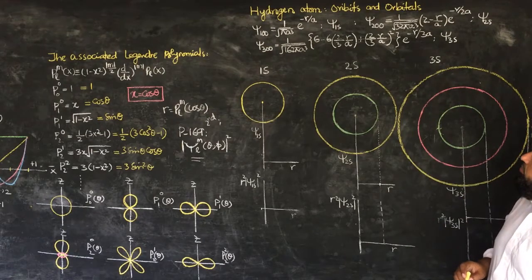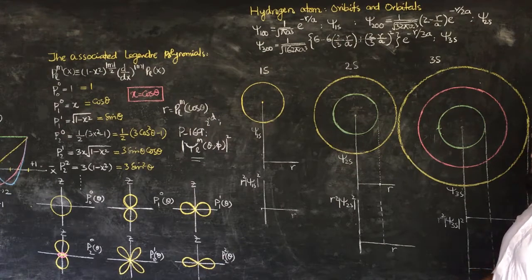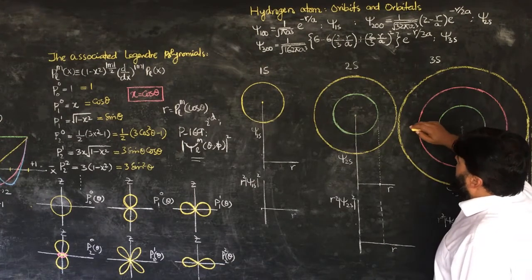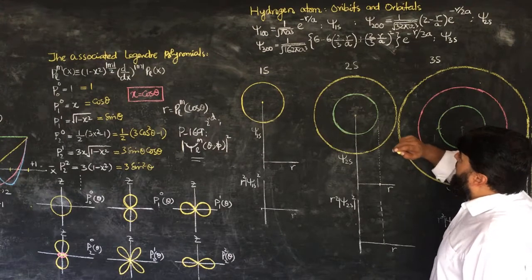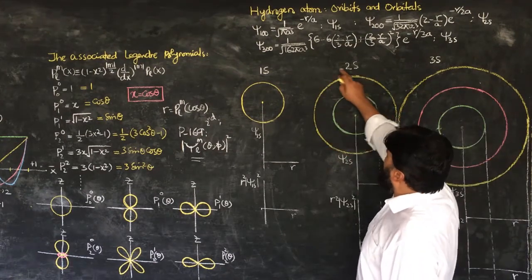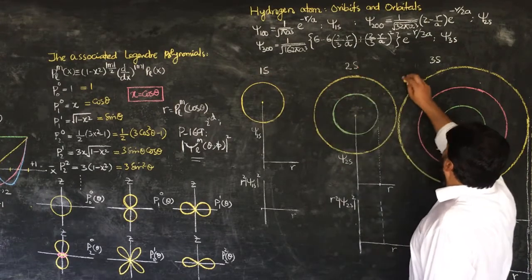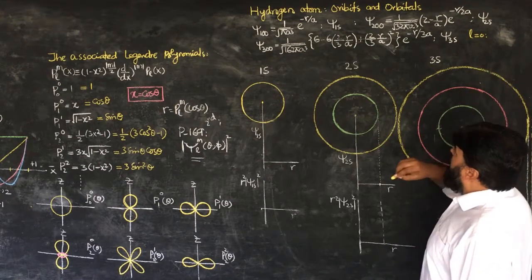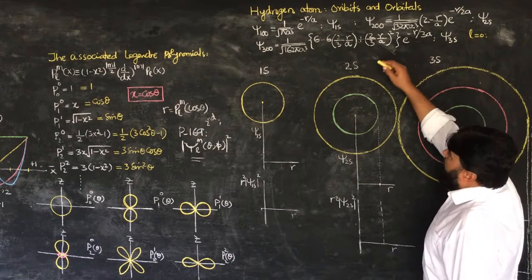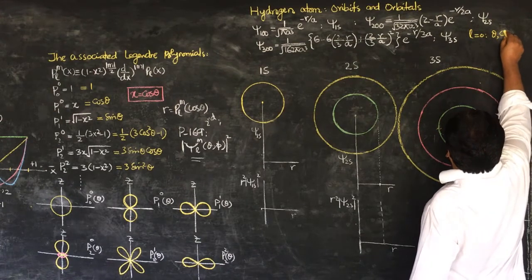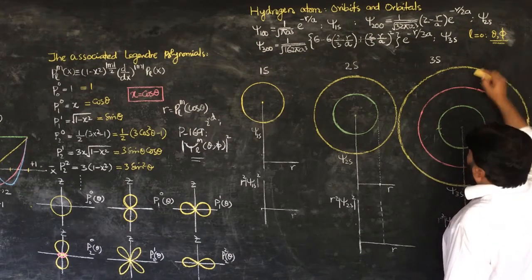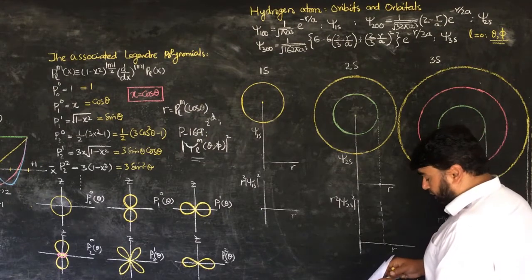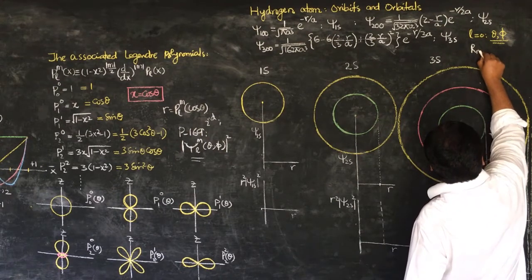We will discuss the hydrogen atom, focusing on orbits and orbitals. We will focus on the first three orbits and inside those orbits, only the s orbital. Because when l is equal to 0, there is no dependence of the wave function on theta and phi — no angular dependence — and all dependence is on the radial wave function R_nl.